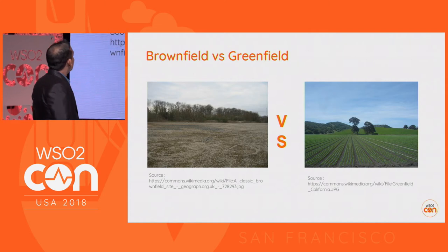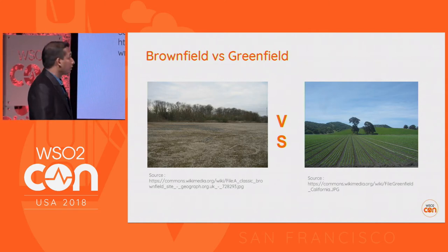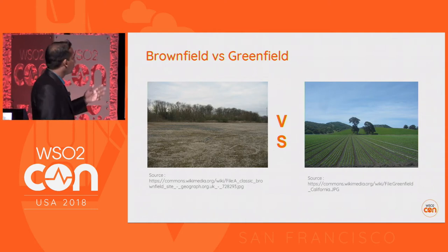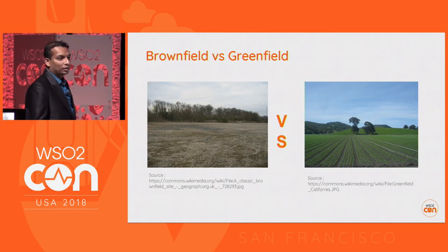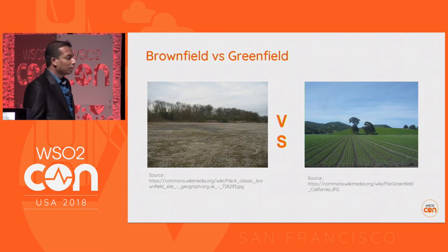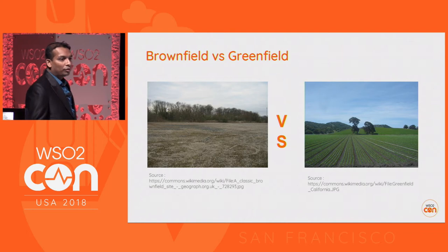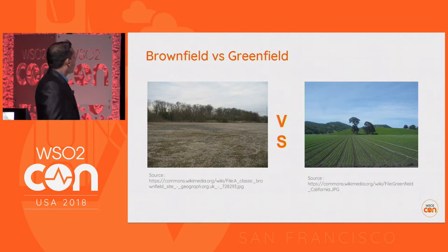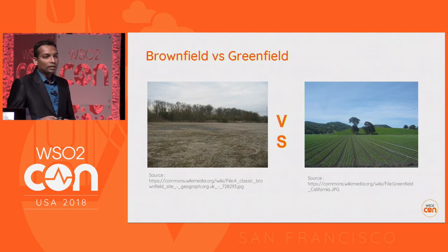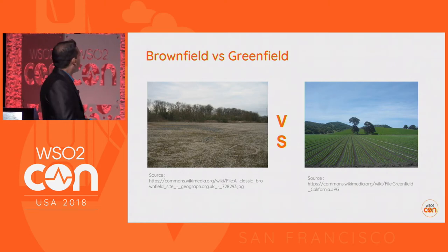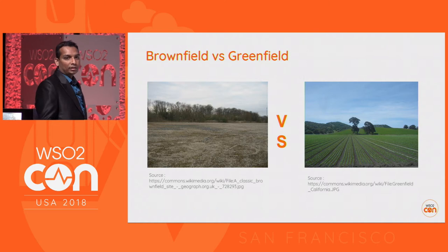These pictures were taken from some online resources. On the left we have a brownfield land and on the right we have a greenfield land. The brownfield term has different meanings in different countries. In general, a brownfield land means a land which is previously used or previously built upon. In urban planning, a brownfield is a term used to denote a land used for commercial and industrial purposes.